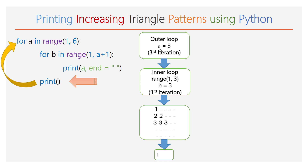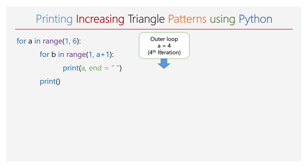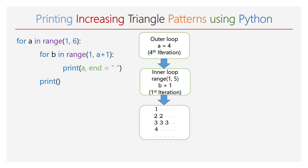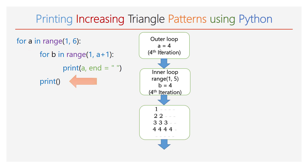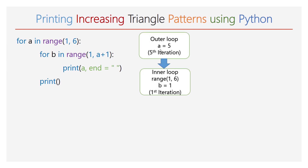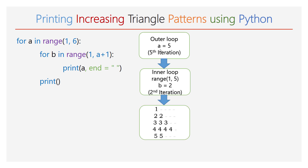The execution goes to the outer for loop. The value of a will be incremented to 4. The range of b will be 1 to 5, and the inner for loop will iterate for 4 times — during each iteration, the number 4 will be printed 4 times. Next, the empty print function is executed and the cursor takes a new line. The execution goes to the outer for loop, now the value of a will be 5. The range of b is 1 to 6, so the inner for loop will iterate for 5 times — during each iteration, number 5 will be printed. Finally, you can see five 5's in the fifth line. This is how we print increasing triangle patterns.